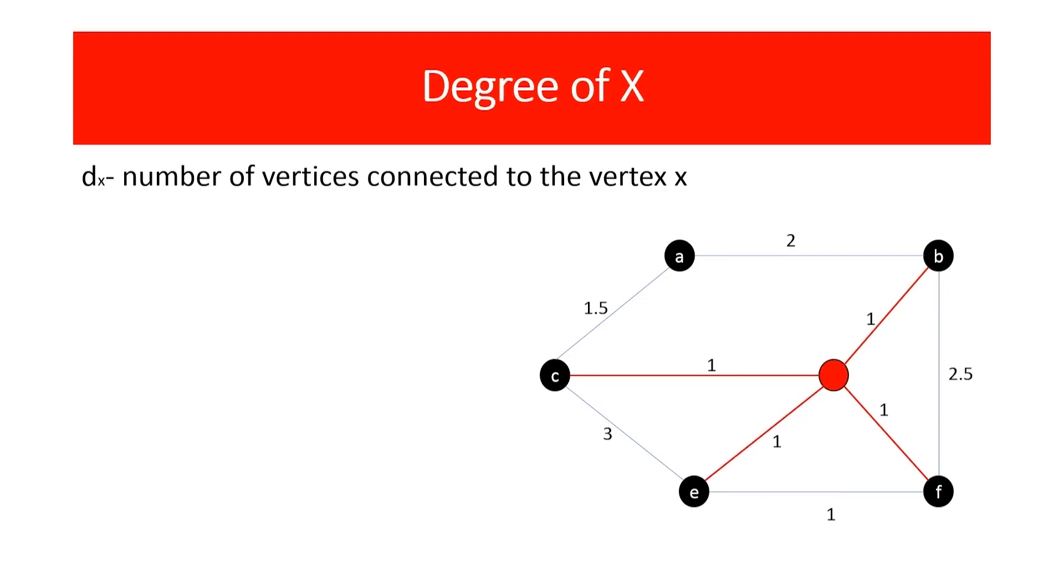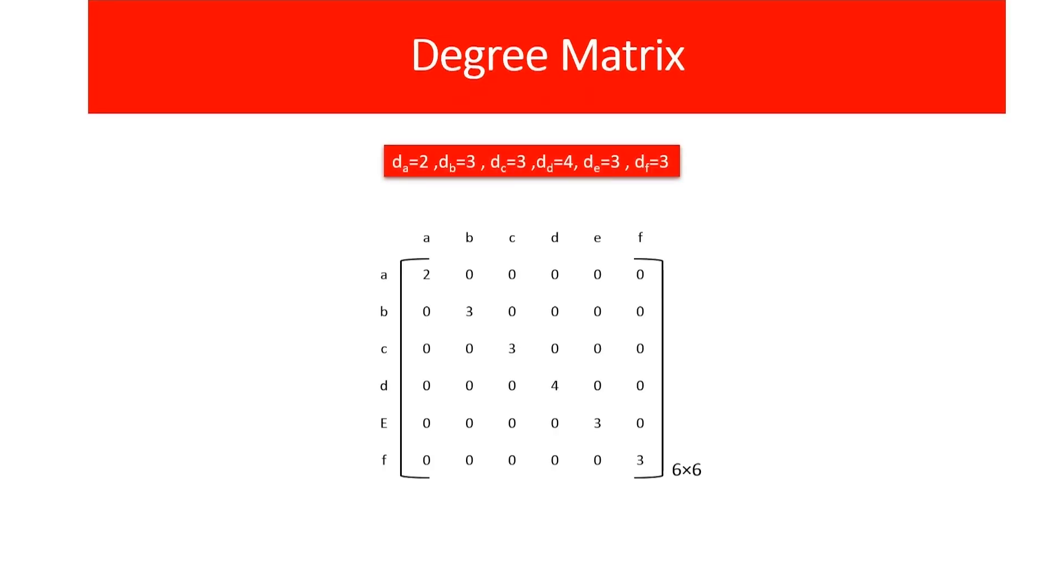First degree matrix. It contains the data that dx, the number of edges connected to point x. Let's take point D for example and fill the appropriate elements. Number of edges connected to the point D is 4. Other elements also follow like point D. Let's mark them on degree matrix.